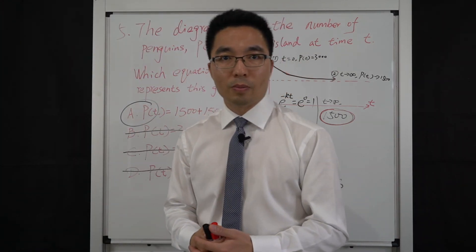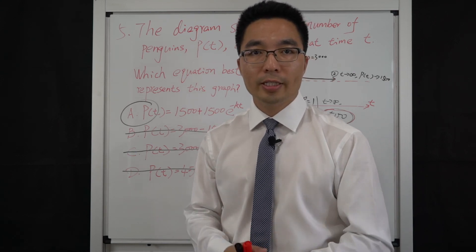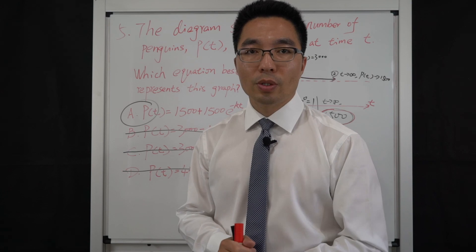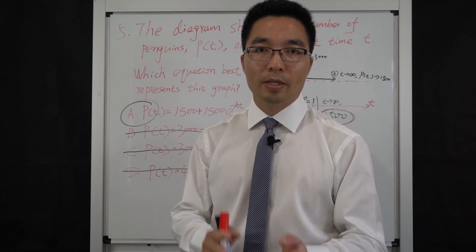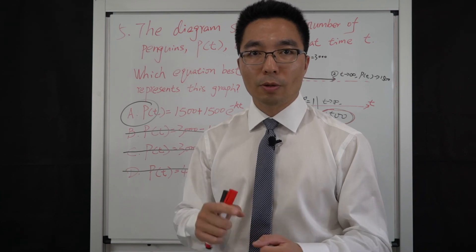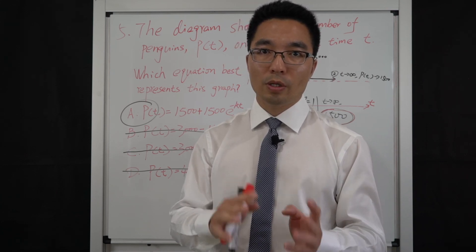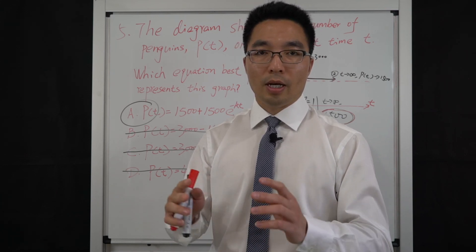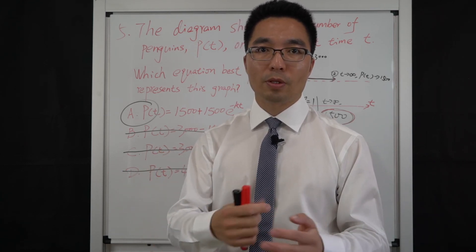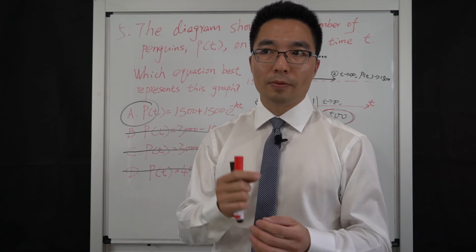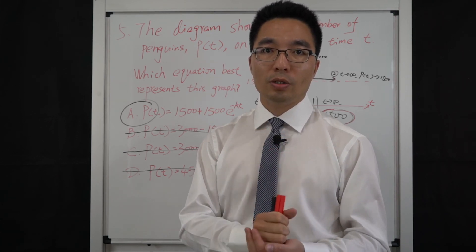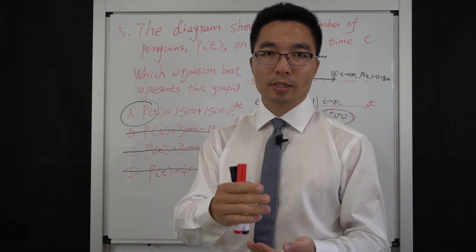That will be all for questions 1 to 5 of the 2018 HSC Mathematics Extension 1 past paper. In the next video I have covered the same paper from questions 6 to 10. I also mentioned L'Hôpital's Rule — if you don't know what it is, please go to the link in my description to watch my other video about it. L'Hôpital's Rule is a very useful rule for handling limit forms such as 0/0 or infinity/infinity.